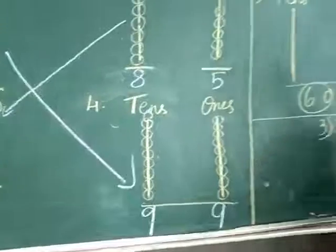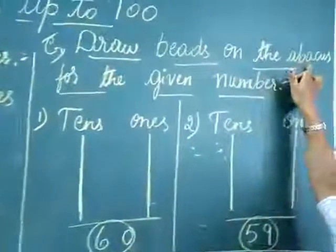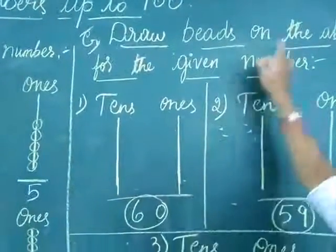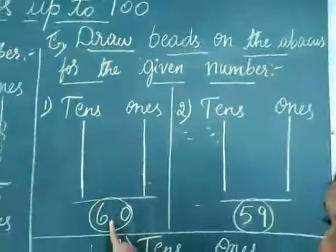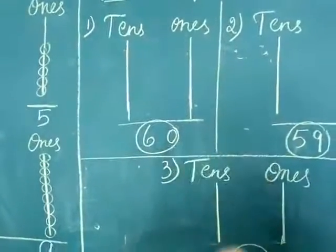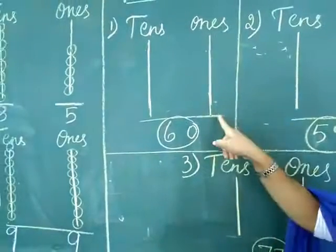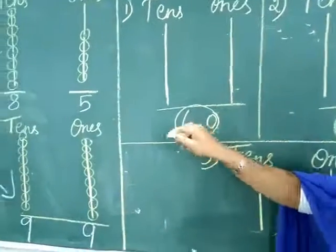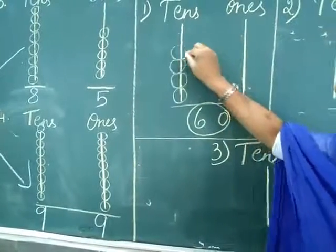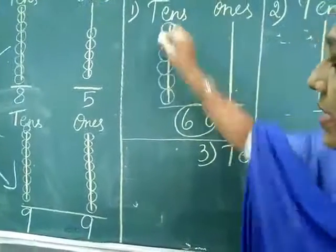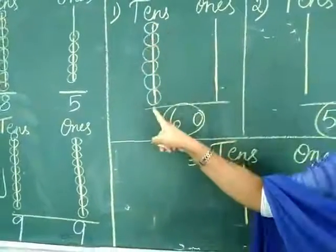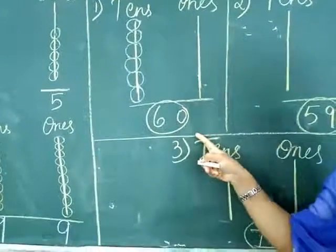Now, draw beads on the abacus for the given number. We have been given a number and we need to draw the beads. Zero means it doesn't have any number, so you don't need to draw any beads in the ones place. The tens digit is six, so draw six beads: one, two, three, four, five, six. Six tens and zero ones is equal to sixty.